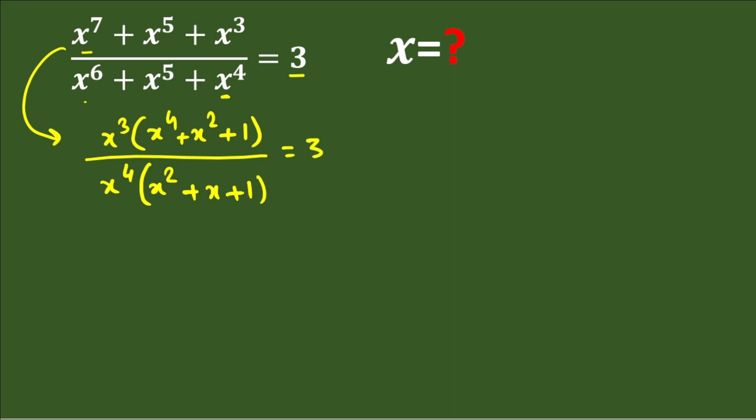In the next step, we cancel x³ (x cube) from the numerator and denominator. Now, the key thing to understand is that in the numerator we have x⁴ + x² + 1, and this value can be converted into the form of x² + x + 1.